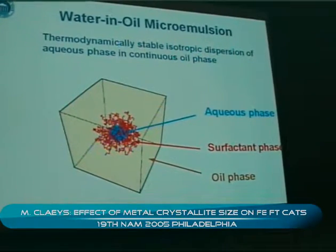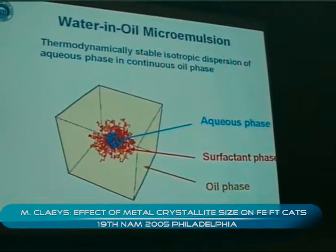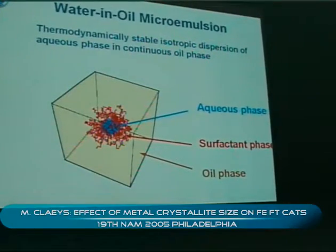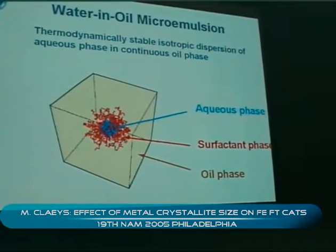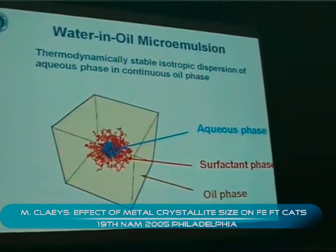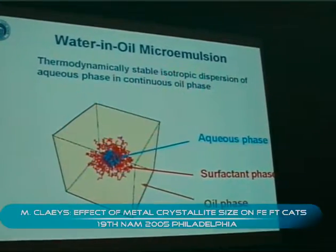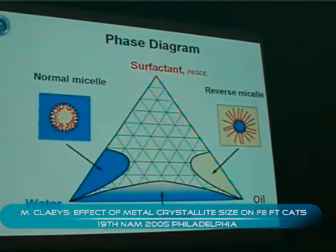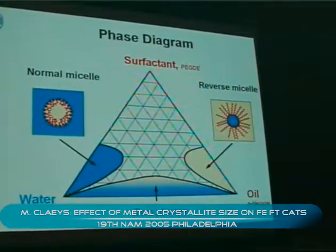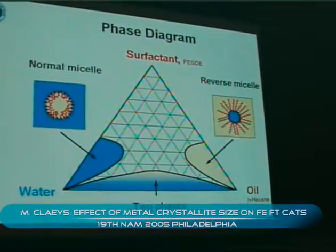We make use of a water-in-oil microemulsion system. A water-in-oil microemulsion is a thermodynamically stable isotropic dispersion of aqueous phase in a continuous oil phase — small water droplets surrounded by a surfactant phase in an oil phase continuum. In the ternary plot, we're sitting in the oil-rich corner, where reverse micelles are present.